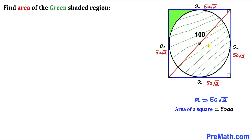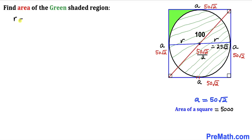Now let's focus on the circle. This line here is the diameter of the circle, and we can see that this length equals the side length a. So the diameter is 50√2 as well. Since the diameter is twice the radius, let's call the radius r. Therefore, r = 50√2 / 2 = 25√2. So our radius r is 25√2.